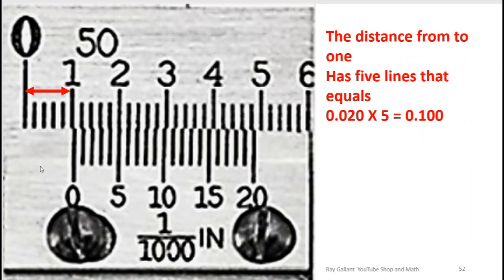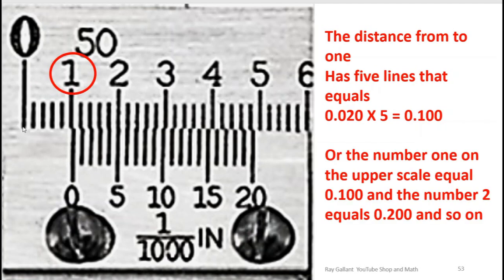So there's five lines. So therefore the first line is going to be a hundred. Or you could just see the hundred mark here and say oh that's a hundred thou.